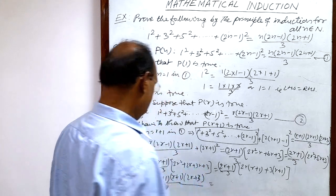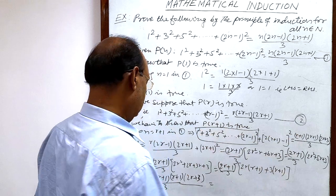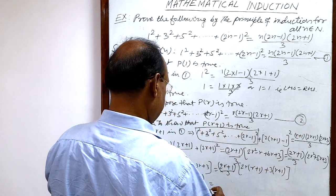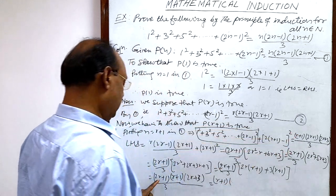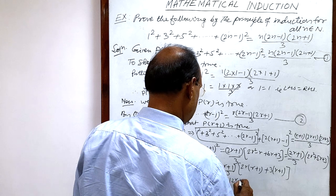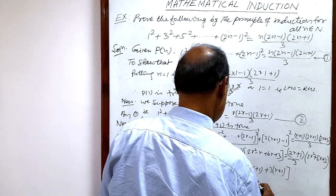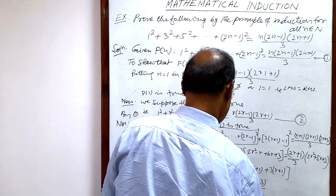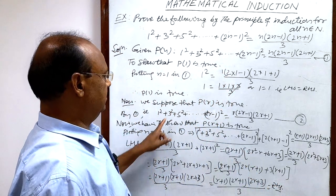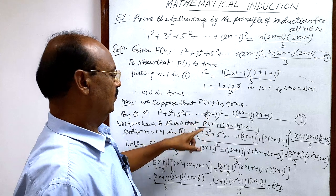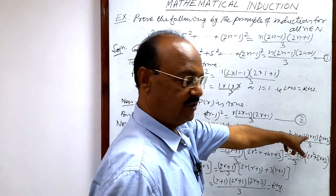Now we just arrange the factors in the numerator. We get (R+1)(2R+1)(2R+3)/3. This is exactly the right hand side for PR+1. So we started from the left hand side and arrived at the right hand side — it has been proved.